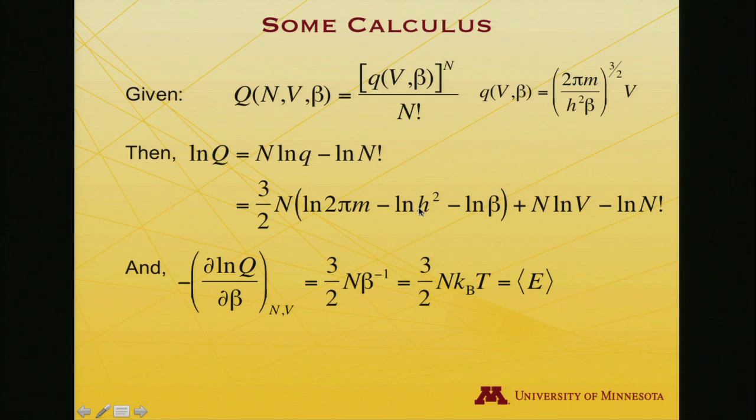What's my goal here? I want to take the negative of the partial derivative of log Q with respect to beta. I can just wander through these terms. Does N factorial depend on beta? No. Does log of the volume depend on beta? No. Here's the only thing that has a beta dependence: minus 3 halves N log of beta. When you differentiate the logarithm with respect to its argument, you get 1 over the argument, so 1 over beta, with a factor of 3 halves N. The two negative signs multiply: end result, 3 halves N beta to the minus 1. And beta is 1 over kT, so beta to the minus 1 is just kT. I get 3 halves NkT for the expectation value of the energy.